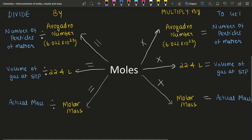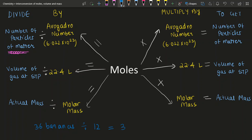I have here a diagram that gives you a summary of this video. If you have the number of particles and divide it by 6.022 × 10²³, you get the number of moles. Just like if you have 36 bananas and divide by 12, you get 3 dozens. Mole is just like a dozen, just a really big number. So you divide the number of particles by 6.022 × 10²³ and you get the number of moles.